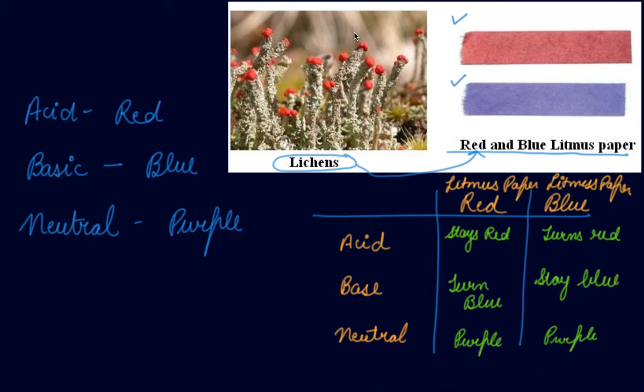This was the test using litmus paper. There are other naturally available indicators such as turmeric and China rose. We will see how to do experiments using turmeric powder and China rose in the coming video. I hope you have understood this — if you have any questions, do write in the comment box and please download our Scholars Learning app.